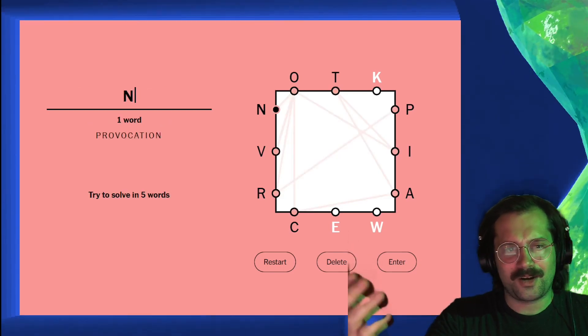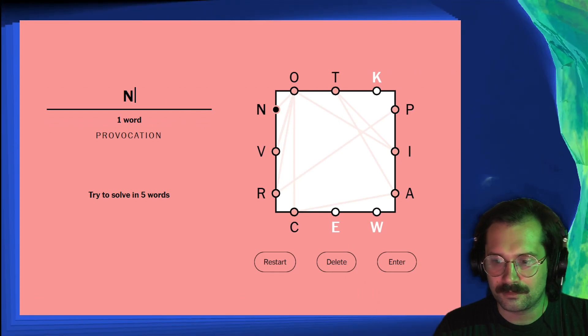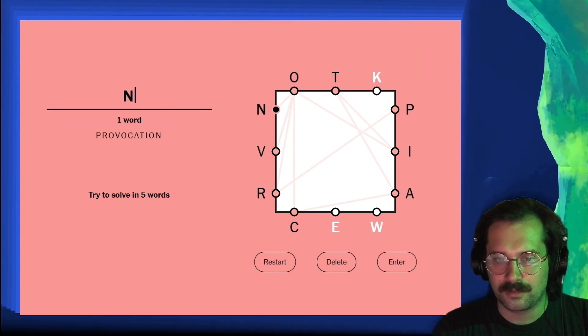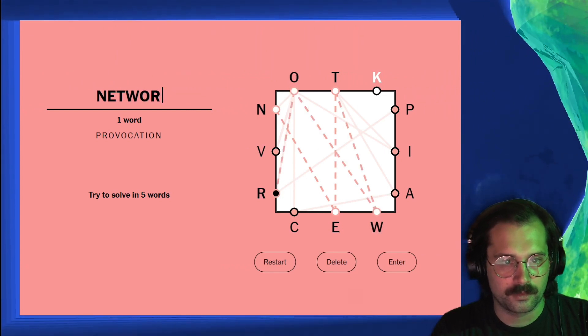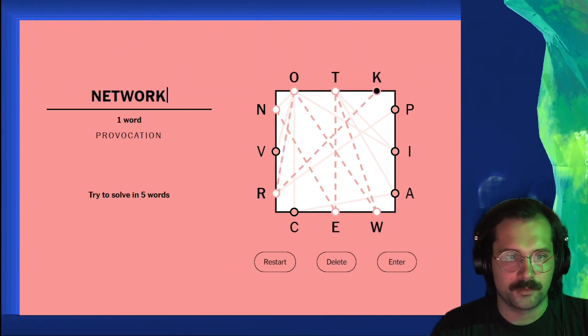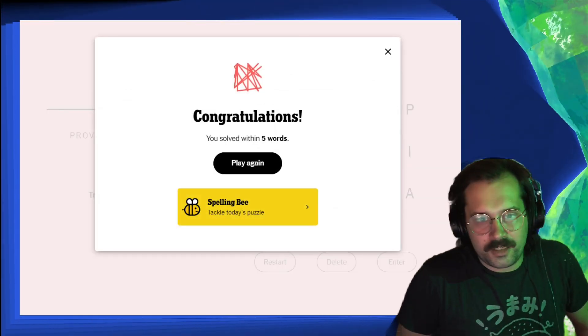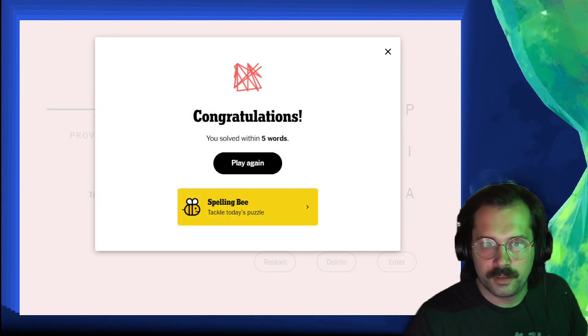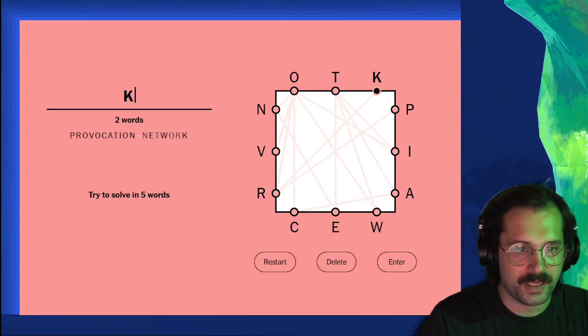All we need is a word that has K in it. We can just do network. There you go! Provocation, network. That's how you do it in two folks. That's how you do it in two. You solve it in five? Nah, we solve in two. Provocation, network.